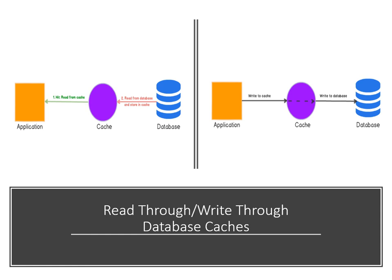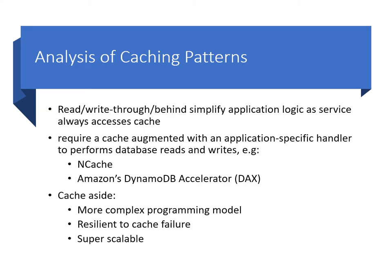Write-behind is also known as a write-back cache and internally is a strategy used by most database engines. The beauty of these caching approaches is they simplify application logic — applications always utilize the cache for reads and writes, and the cache provides the magic to ensure it interacts appropriately with the back-end storage systems. This contrasts with the cache aside pattern in which application logic must be cognizant of cache misses. Read-through, write-through, and write-behind caching strategies require a cache technology that can be augmented with application-specific handlers to perform database reads and writes. An example of this is Amazon's DynamoDB Accelerator, which sits behind the application code and DynamoDB and transparently acts as a high-speed memory cache to reduce database access times.